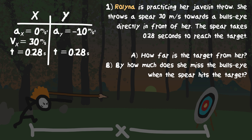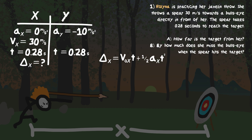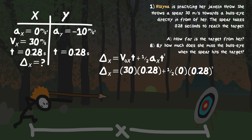We're looking for how far the target is, which is the displacement in the X direction. We have three pieces of information, so we can find it. Using the formula: displacement X equals V-initial-X times T plus one-half times A-X times T-squared. Plugging in: displacement equals 30 times 0.28 plus one-half times 0 times 0.28 squared. The acceleration term goes to zero, giving us a displacement of 8.4 meters.